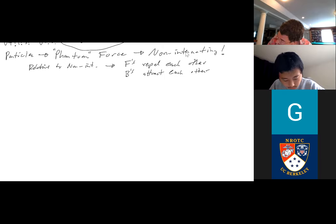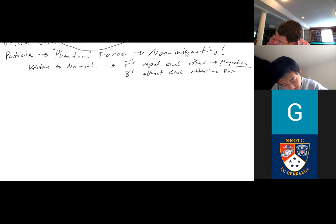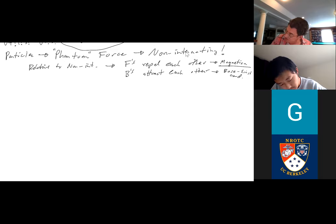This is significant because the repulsion of fermions leads to magnetism — you wouldn't have magnetism without that. And bosons attracting each other leads to Bose-Einstein condensation. These are two major consequences of the symmetrization of the many-body wave function. The simplest way to see this, following Griffiths, is to calculate the average distance between the two particles.